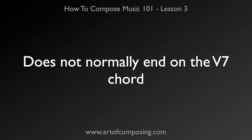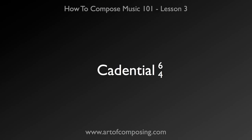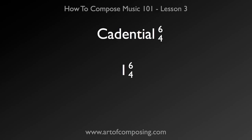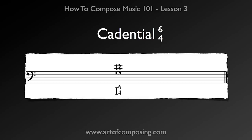The half cadence ends on a V chord. It's very rare to see a V7 chord. It also is normally preceded by a II chord in first inversion, or by something called a cadential 6-4. A cadential 6-4 is a I-6-4 chord — a I chord in second inversion — but it's easier to look at it like this. You've got the fifth note, the dominant, and above it you have a sixth and a fourth. If you're looking at it in C major, you've got a G as the root, and then you've got an E on top and a C just below that. This resolves into a dominant chord triad.